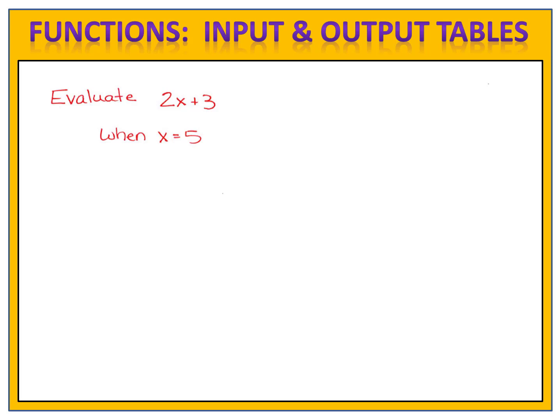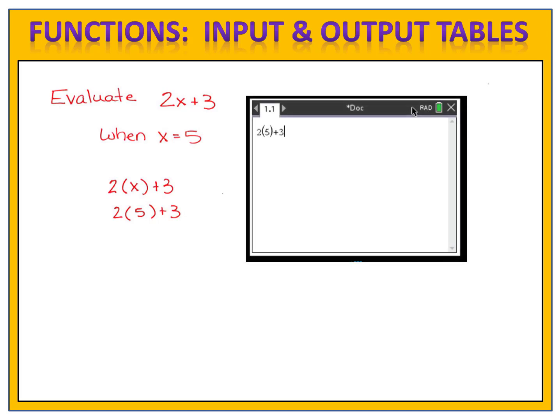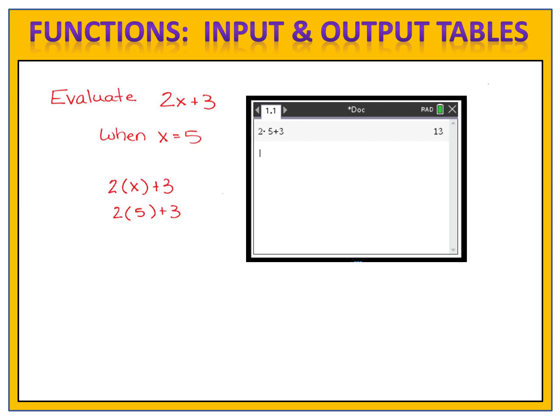In order to do that, we write the expression with the variable in parentheses like this. Then we substitute the 5 in place of the x, and then we evaluate. We could do that by hand, following order of operations, or we could simply type it directly into our calculator. Be sure to use parentheses where appropriate, and we see that the result is 13.